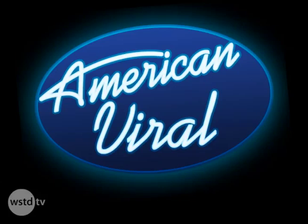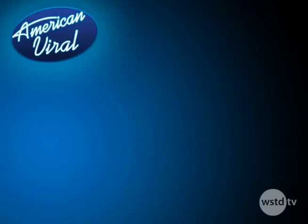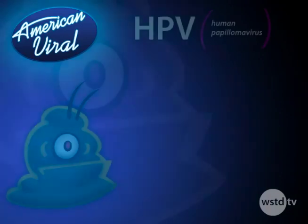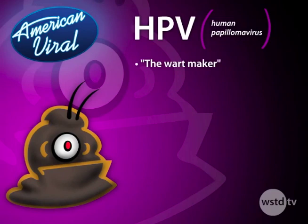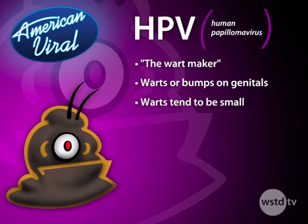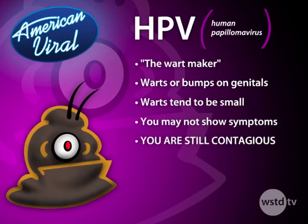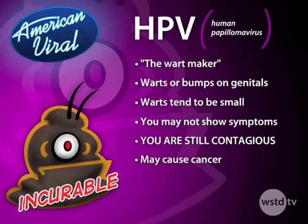It's time for American Viral! Who's the worst of the three H's? Our first contestant is HPV, also known as the Wart Maker. HPV frequently gives you warts or bumps on your genitals, including the cervix and anus. They can get really big, but tend to be small, often unnoticeable. Sometimes when you get HPV it won't give you warts — you won't even know you have it, but you can still pass it to others. Worse than warts, some types of HPV can cause cancer. And there's no curing this H. Let's hear it for human papillomavirus — definitely not cool.